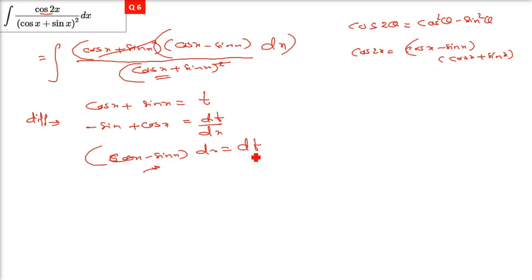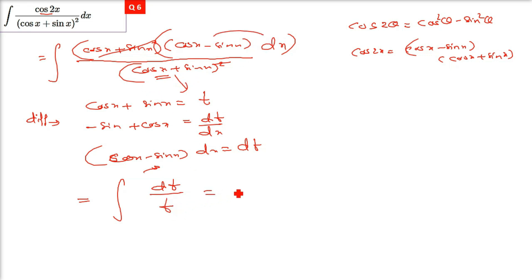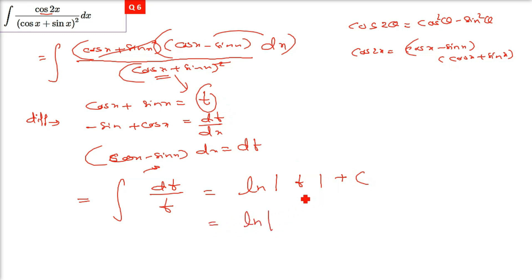The numerator becomes dt and the denominator is t, so the integral becomes ∫dt/t. That gives ln|t| plus constant of integration, which is ln|cosx + sinx| + C. That is your answer.